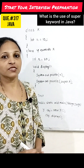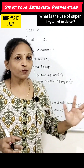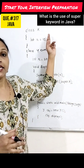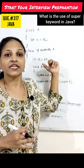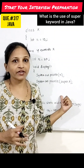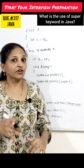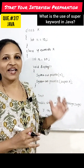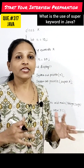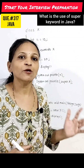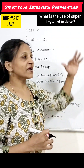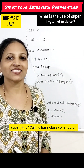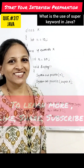The super keyword can also be used to call the immediate parent class method inside a derived class, if the derived class has the same method name as the parent class. Additionally, super can be used to call a base class constructor from a derived class constructor. Thank you.